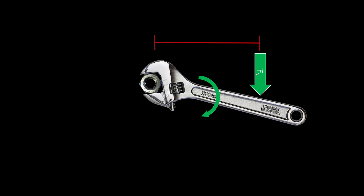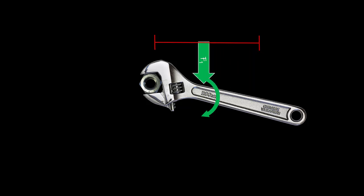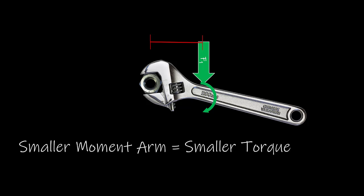Conversely, if that force is moved closer to the axis of rotation, we are going to decrease the length of the moment arm, and we are also going to decrease the size of the torque. So a smaller moment arm equals a smaller torque.